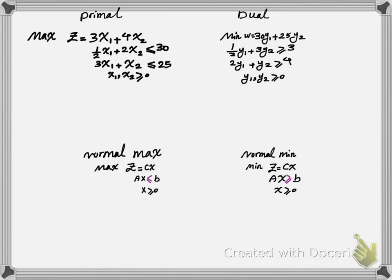A normal maximization problem is a linear programming problem where all the constraints are less than or equal to some right hand side. A normal minimization problem is an LP where all the constraints are greater than or equal to some right hand side. The importance of this is that if you have a normal max problem its dual is always going to be a normal min, and if you have a normal min its dual is going to be a normal max problem.